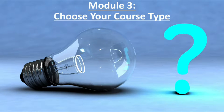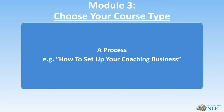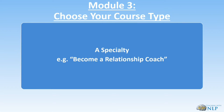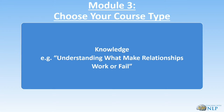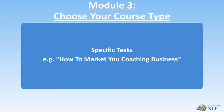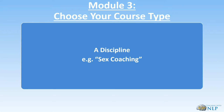Next, let's look at Module 3, which is about choosing your course type. What type of course are you planning on creating? You can do all sorts of things. Are you doing a process, for example how to set up a coaching business? Is it a specialty, like how to become a relationship coach? Maybe it's a knowledge-based training like understanding what makes relationships work or fail, or maybe your course is about teaching specific tasks like how to market your coaching business, or maybe it's a specific discipline within a niche like sex coaching.